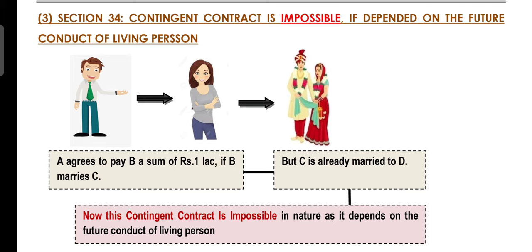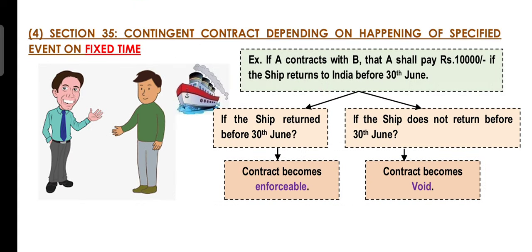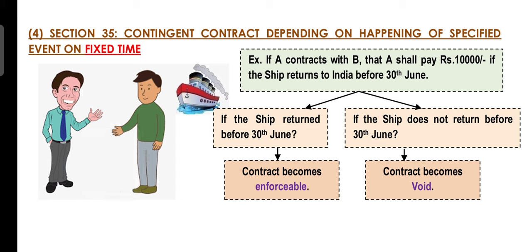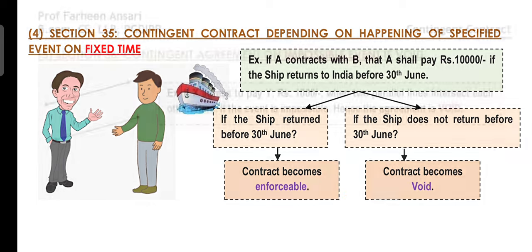Section 35 states that if a Contingent Contract depends on a fixed time period, it will be enforced only if the event occurs within that time. For example, A entered into a contract with B that A will pay Rs. 10,000 if the ship returns to India before 30th June. If the ship reaches India before 30th June, the contract is enforceable. But if the ship arrives after 30th June, this contract becomes void. This is called a Contingent Contract depending on the happening of a specified event within a fixed time.